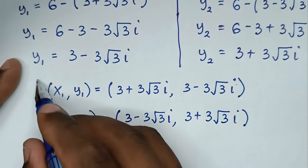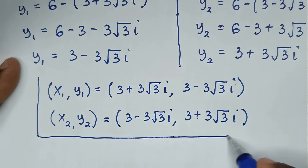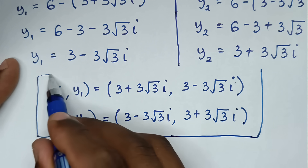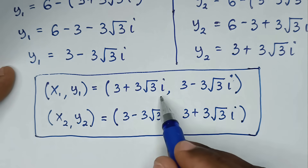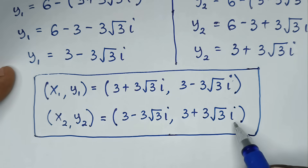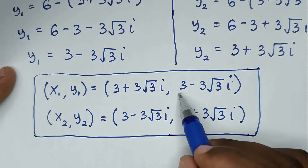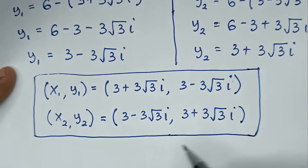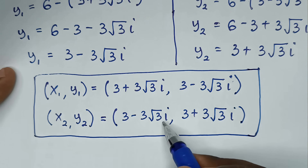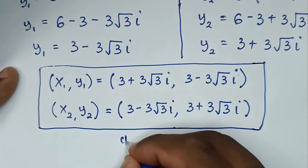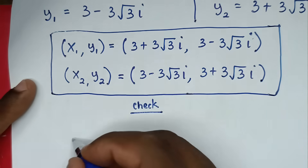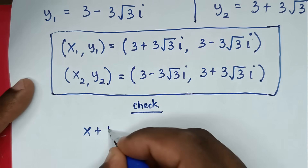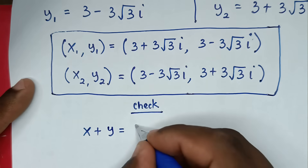These are the two solutions to our problem. The value of x in the first solution is the value of y in the second solution, and vice versa. Now let's check from our problem: x plus y is equal to 6.